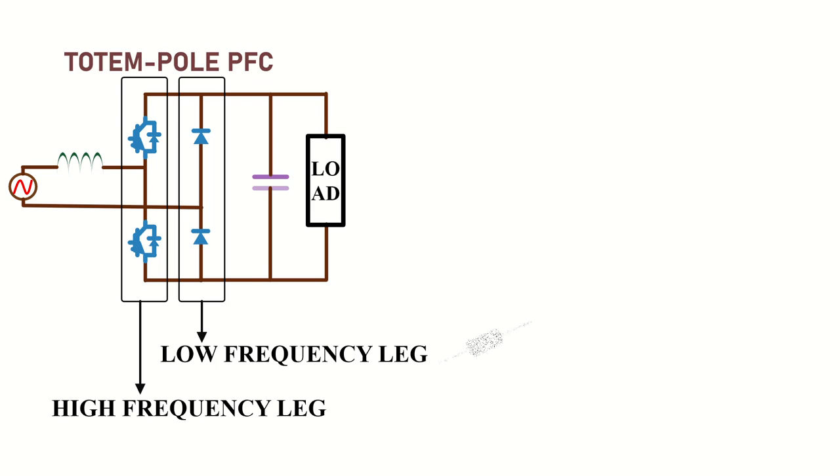In the low frequency leg, diodes are normally used. But if you want to increase the total efficiency of the converter, silicon MOSFET can also be used.